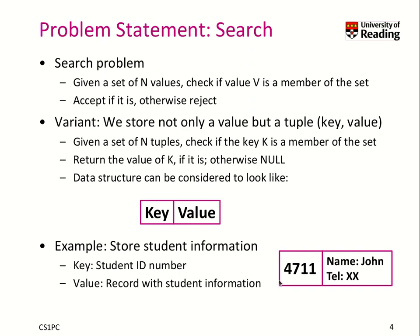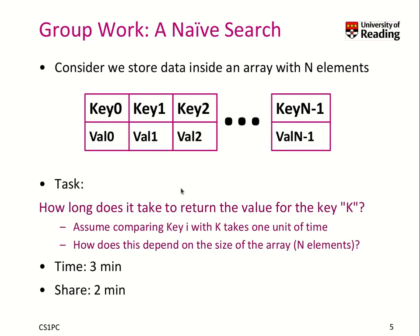An example about student information would be that we want to store student details like name, telephone number, and so on, and the key should be the student ID number like 4711. When we have such key-value tuples, we want to store many of them, so one data structure would be an array. We store n elements, with key 0 and value 0 as the first element, and so on. When we get a specific key k, we must find the corresponding value if it exists, or return null.